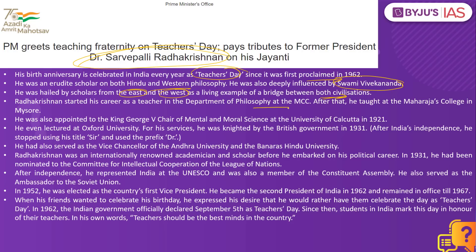Radhakrishnan started his career as a teacher in the Department of Philosophy at MCC. After that, he also taught at the Maharaja College in Mysore. He was appointed to the King George V Chair of Mental and Moral Sciences at the University of Kolkata in 1921. He even lectured at Oxford University. He also served as Vice Chancellor of Andhra University and Banaras Hindu University, and was an internationally renowned academician who also embarked on a political career.